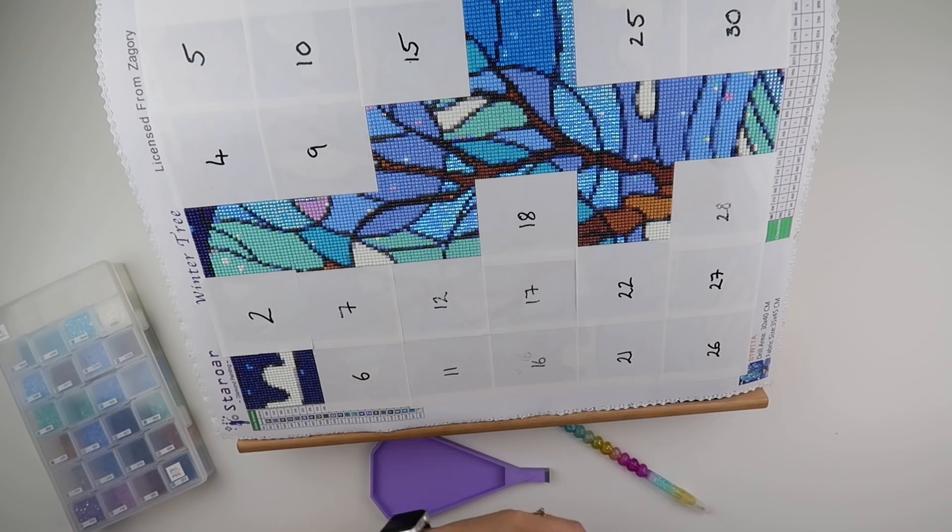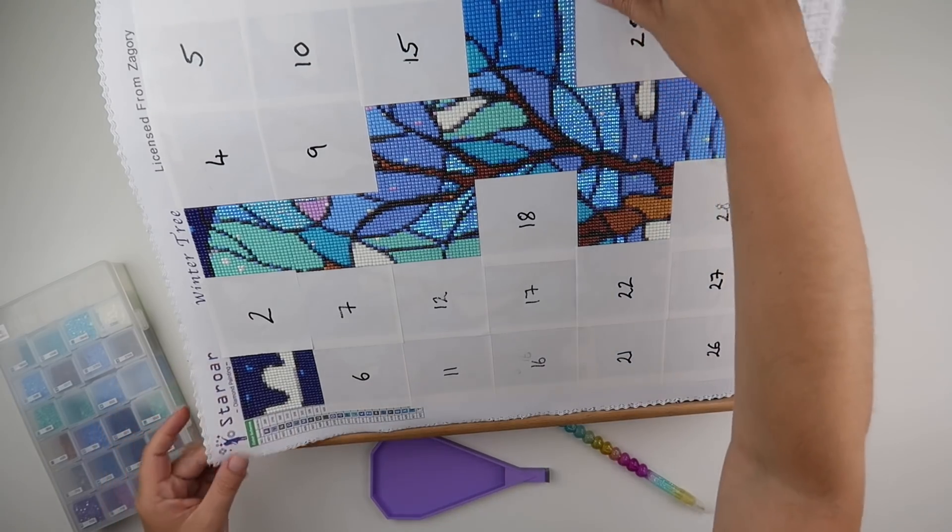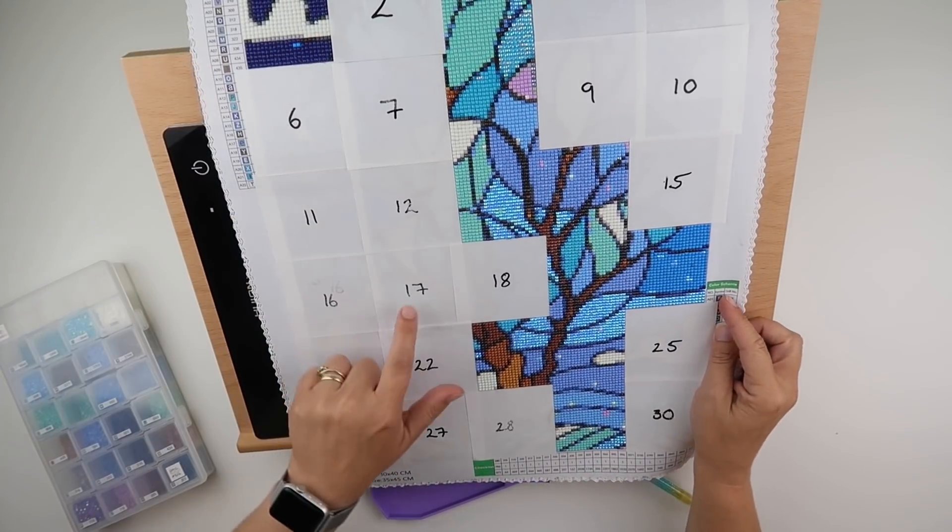Today is number 17. Oh, we do have a square on its own, sort of. So we're going here.